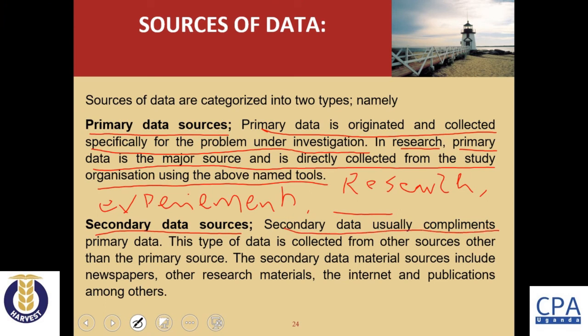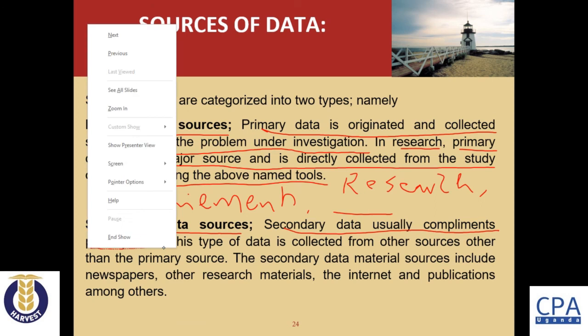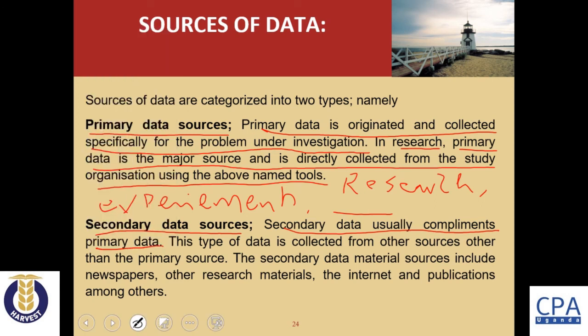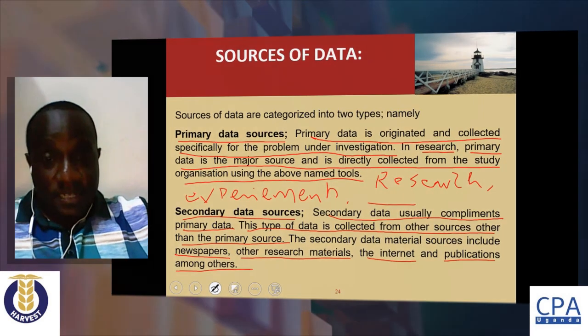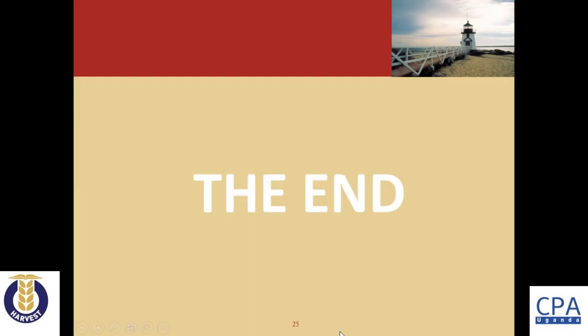Secondary data is data that has already been collected and will complement primary data. This type of data is collected from sources other than primary sources — for example, newspapers, other research materials, the internet, and publications, among many others. You are going to be examined on the sources and types of data. This closes unit number one, and we now move to unit number two.